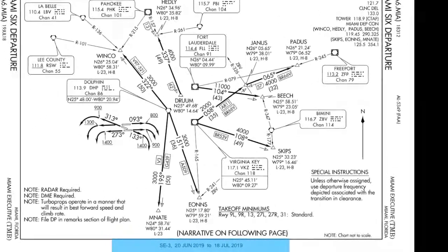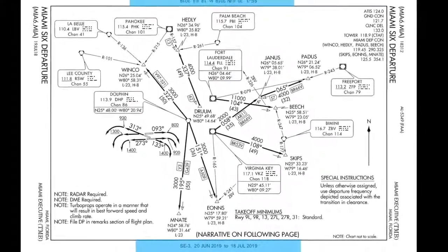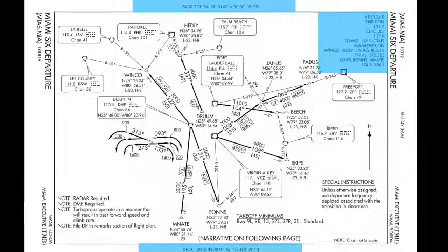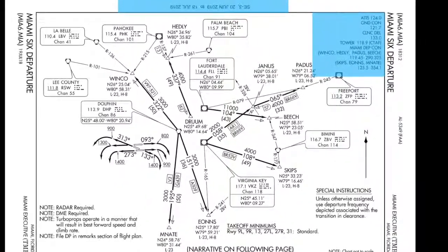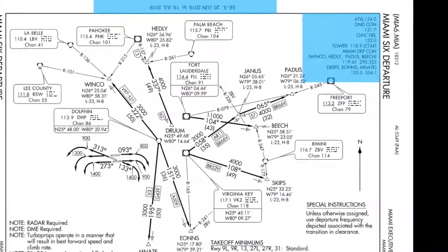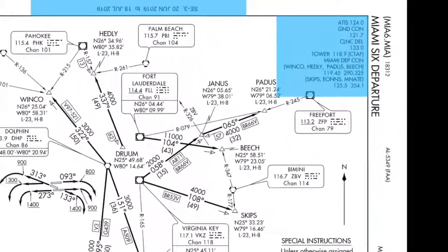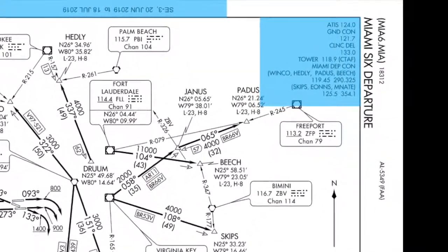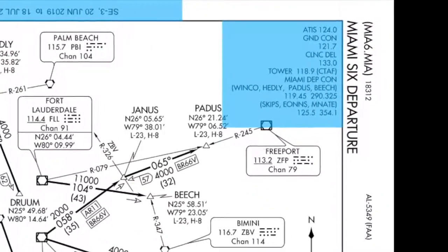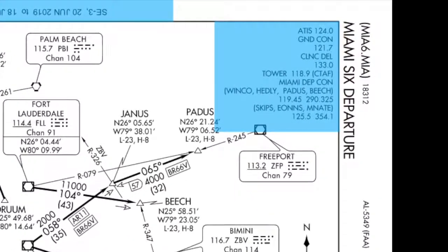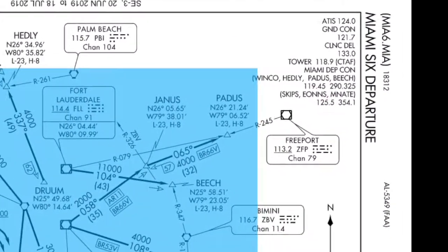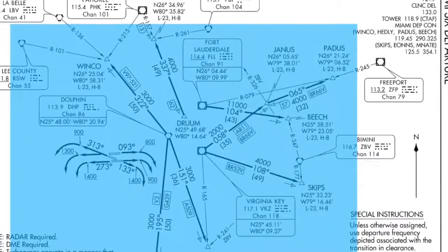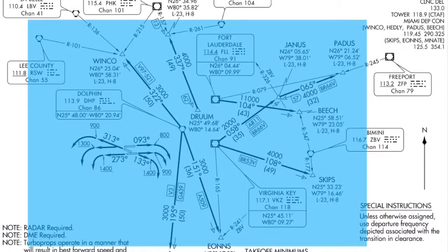There on the top right-hand corner, depending on how you're seeing the chart, you'll see the ATIS frequency, ground control, tower, and any frequencies you're going to need for departure. Then you'll see the plan view, how we can expect to execute this departure procedure, and any altitude restrictions we might have.